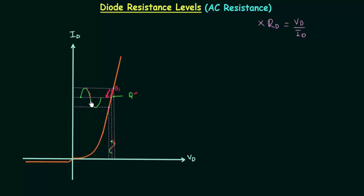After this, the current and voltage across the diode decrease further and the operating point moves down. Then when current starts increasing again along with voltage, the operating point moves back up. When both current and voltage are equal to 0, the operating point is again Q. So the operating point is moving up and down like this.